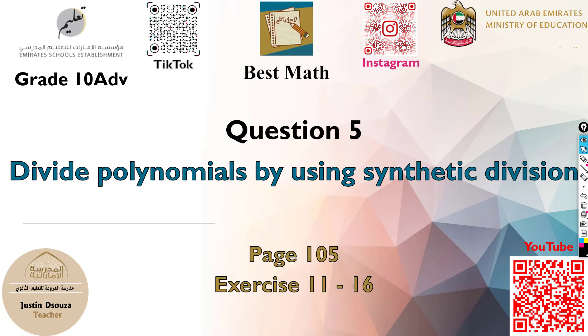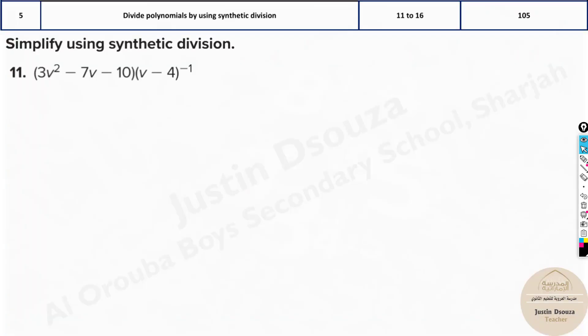Question five is to divide polynomials by synthetic division. Since it's in the MCQ part, it doesn't matter which type of division you're using as long as you divide it. Now, even over here there are shortcut methods. I'm sure by now you know what synthetic division is. You have to take in the coefficients, write them in order.